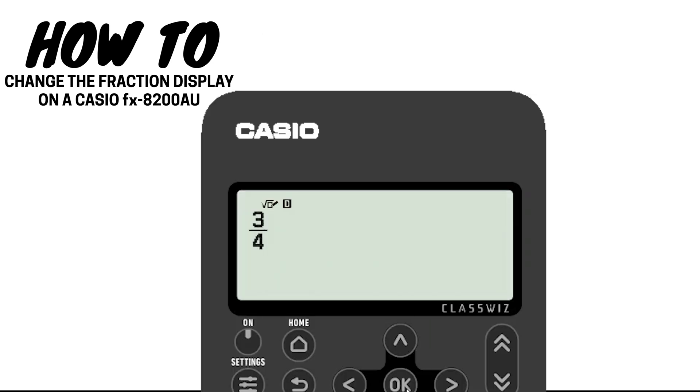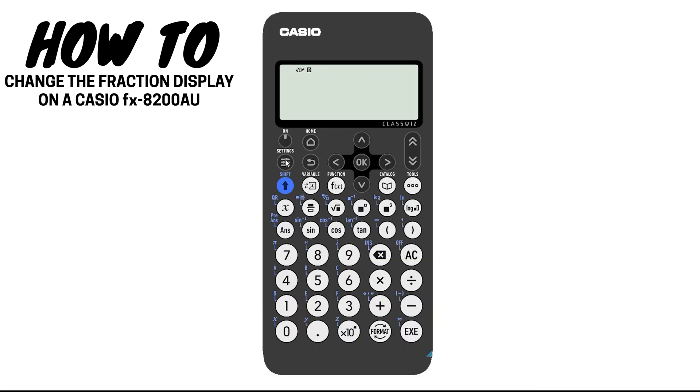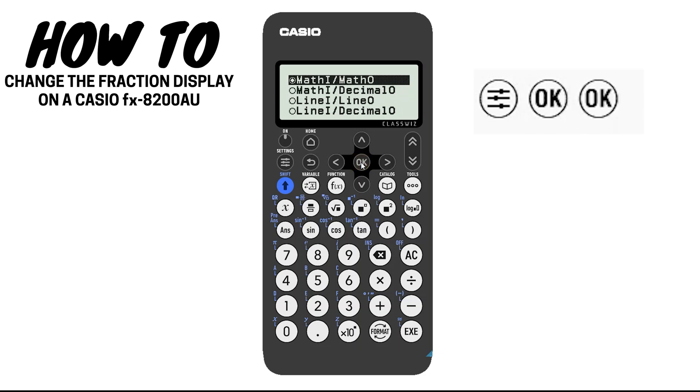If this symbol isn't displayed, then your fractions are probably looking like this. To change the fraction display setting, press the settings key, then press OK to enter calc settings. Press OK again to access the input output setting.